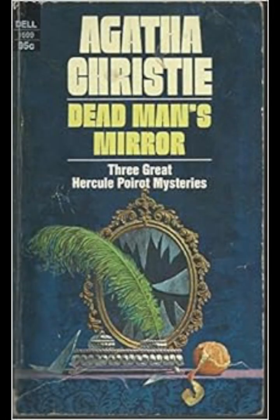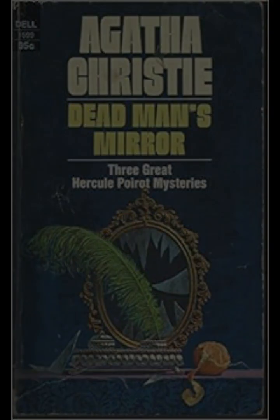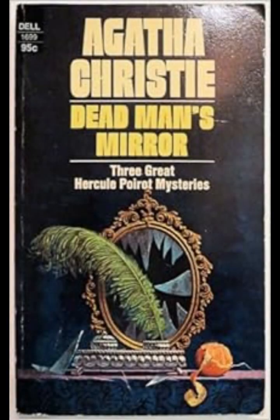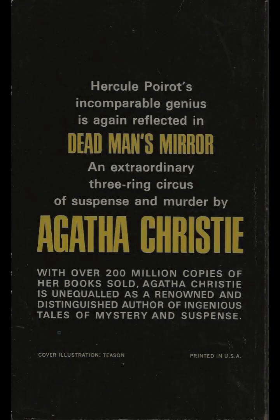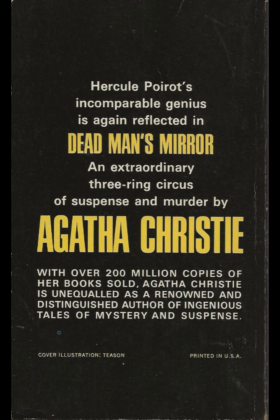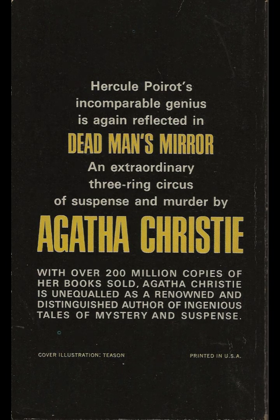Poirot's methodical approach to solving the case underscores his brilliance as a detective. He meticulously examines the physical evidence, such as the position of the gun and the trajectory of the bullet, while also considering the psychological aspects of the case. His famous 'little grey cells' are put to the test as he navigates the intricacies of the Chevenix-Gore family dynamics. Poirot's interrogation of the suspects is a showcase of his ability to read people, drawing out their true natures through seemingly innocuous questions and observations.